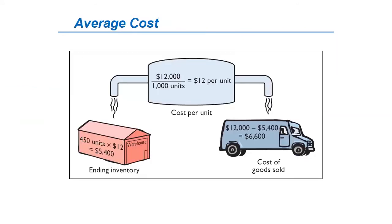Here you can see how the unit cost is determined: $12,000, the total cost of all units, divided by 1,000 units available, gives us $12 per unit. From this we can calculate the cost of goods sold directly, or calculate the ending inventory first and then derive the cost of goods sold.